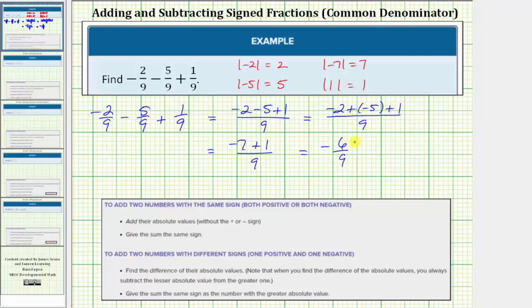To simplify, we'll divide the numerator and denominator by three. Negative six divided by three equals negative two, and nine divided by three equals three. The final result simplifies to negative two-thirds.